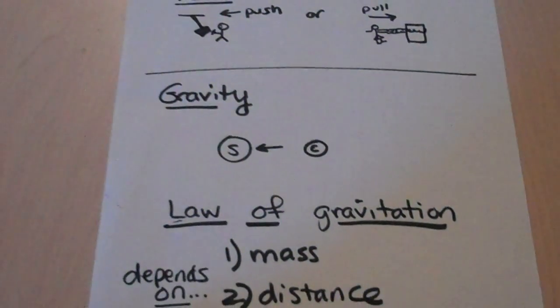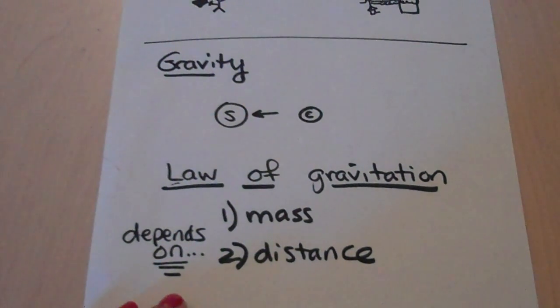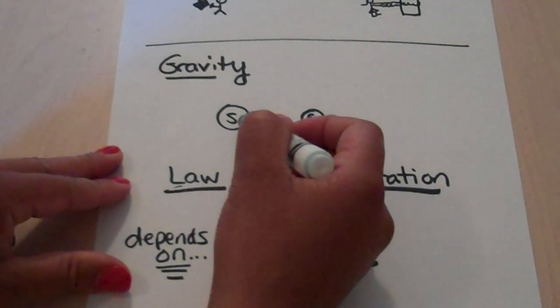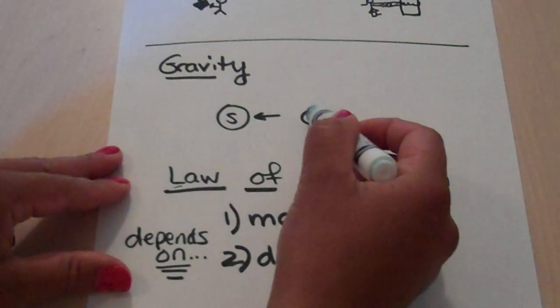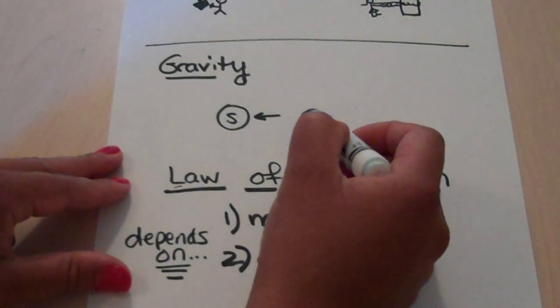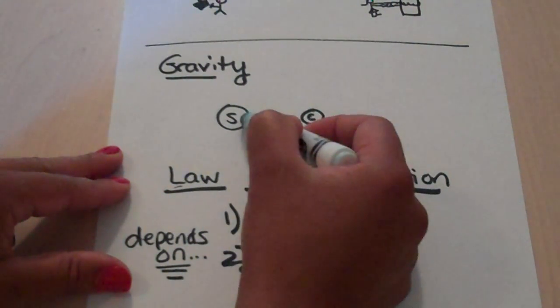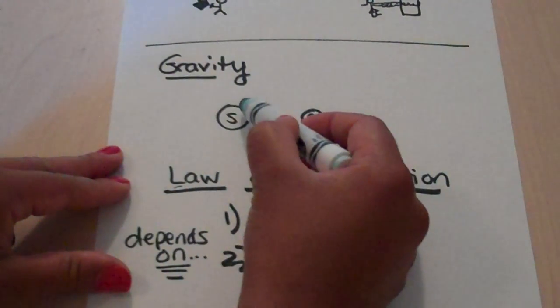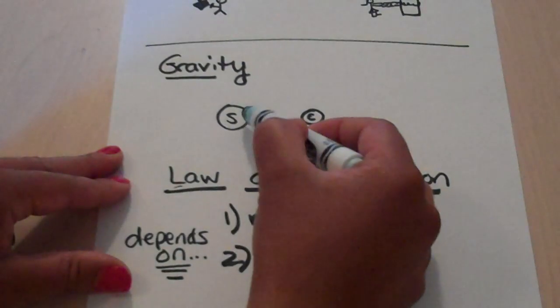So here we have gravity. Gravity is a force of attraction that all objects have towards each other. And in this case, this S is the sun, and here is the earth, and I put an E there. And the earth is attracted to the sun because this is a larger object. It has a very strong pull of attraction on the smaller object, the earth.